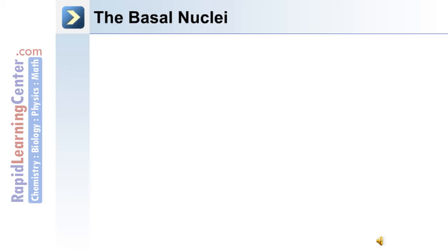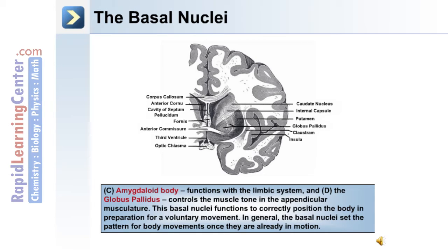The amygdaloid body functions with the limbic system, and the globus pallidus controls the muscle tone in the appendicular musculature. The basal nuclei function to correctly position the body in preparation for a voluntary movement; in general, they set the pattern for body movements once they are already in motion. The structures visible in this image include the caudate nucleus, the putamen, the globus pallidus, the claustrum, and the insula.